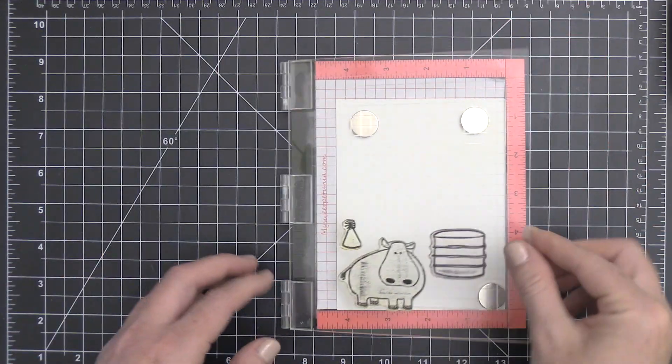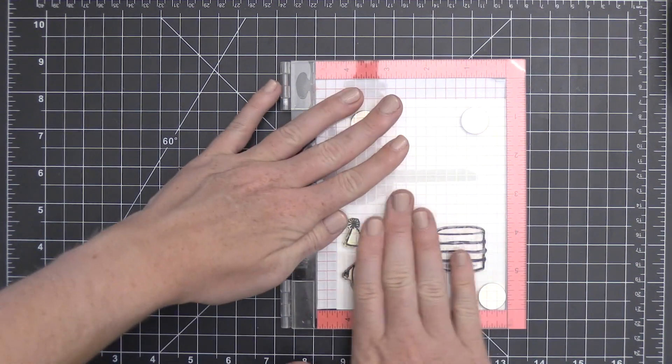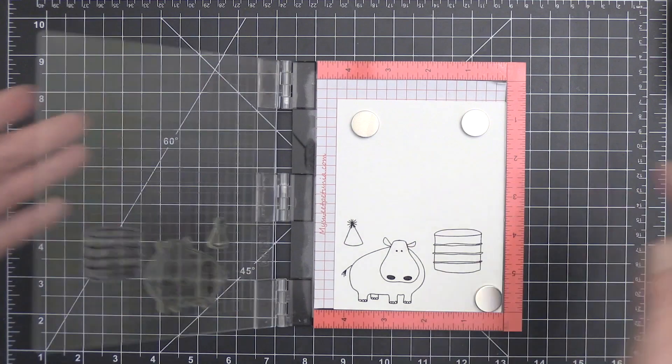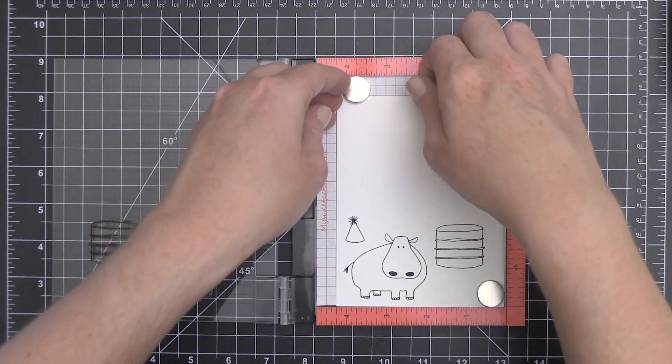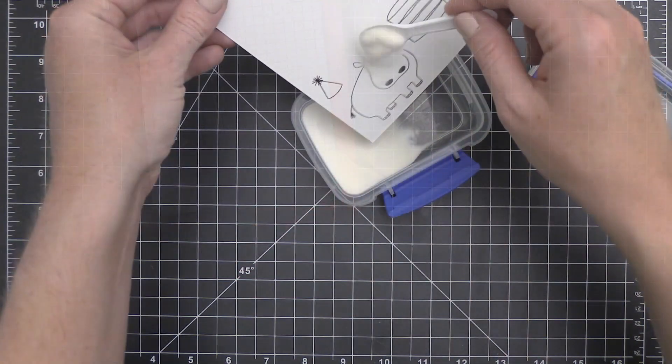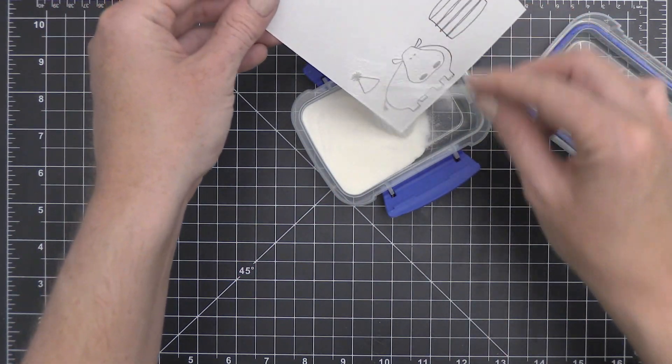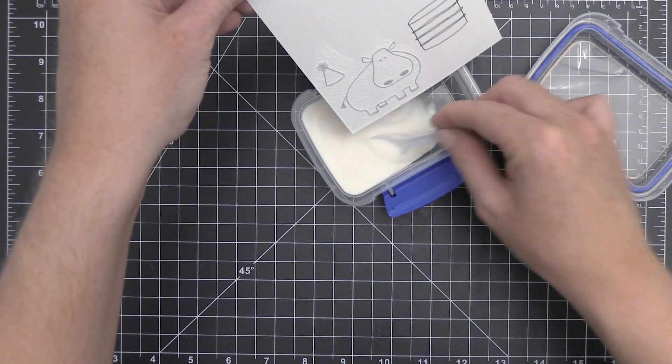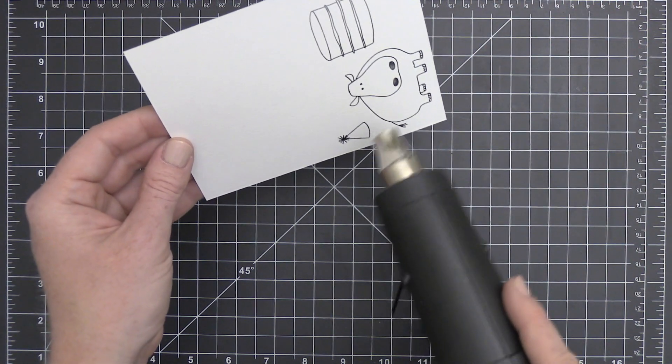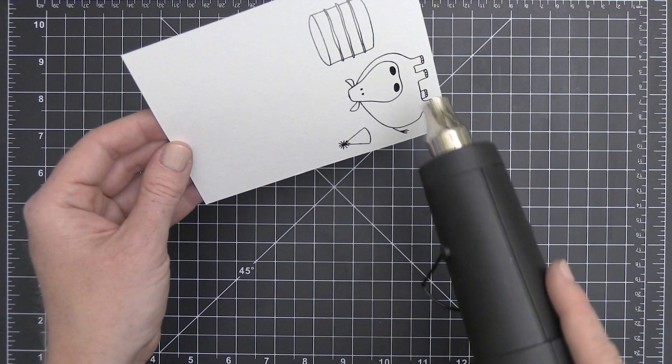I'm going to emboss these on some Tim Holtz watercolor cardstock because I will be doing a little bit of watercolor. I've prepped the surface with my EK Success powder tool and I'm using my mini MISTI to stamp these onto that cardstock using some VersaFine Onyx Black pigment ink. Since it's a pigment ink, I can go ahead and emboss with this, and while it's still wet I'm going to add just some regular clear embossing powder to this.